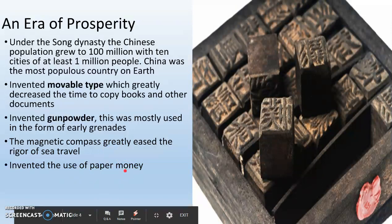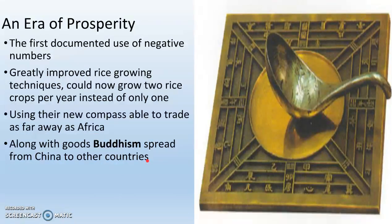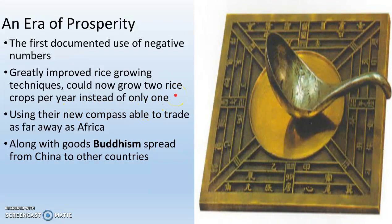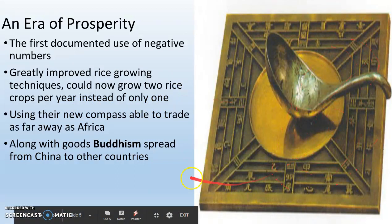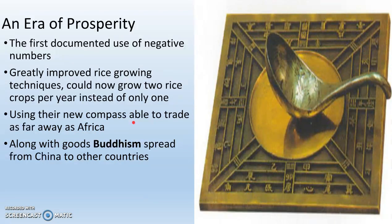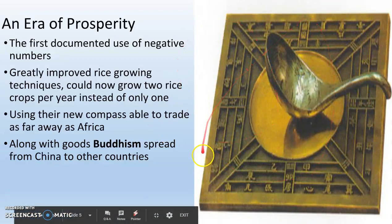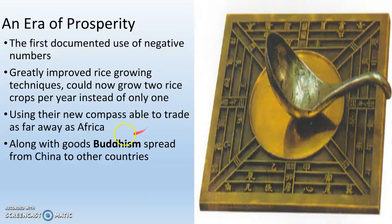They also invented the use of paper money, though these are less important than movable type and gunpowder. They had the first documented use of negative numbers, which allows you to do math better. They improved rice growing techniques, so they could now grow two rice crops per year instead of only one — really important for a growing population. Using their new compass, they were actually able to make it as far away as Africa. Some people even say they made it to the Americas before Europeans did, which is debatable — there's not a lot of evidence, but some people believe it.